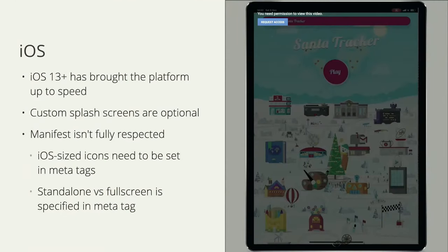On iOS, installable web apps have been available for some time, and in the last few releases Apple has made access to them a lot more practical. One key difference on iOS: you still need to specify the Apple Touch icon — iOS doesn't respect the icons specified in the manifest. There is a separate meta tag you need to include when creating a PWA you expect to work on iOS.